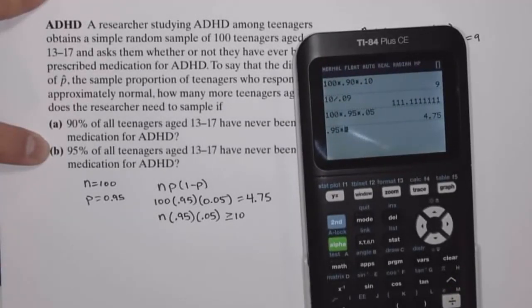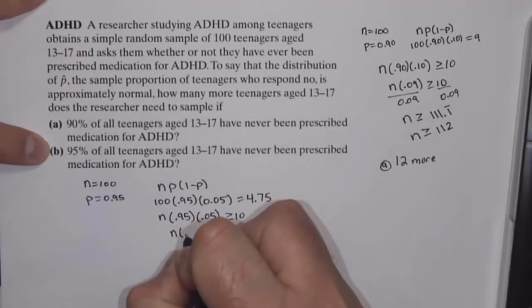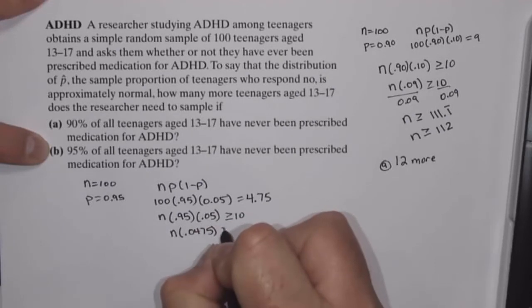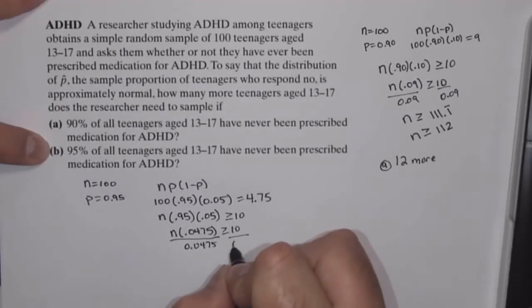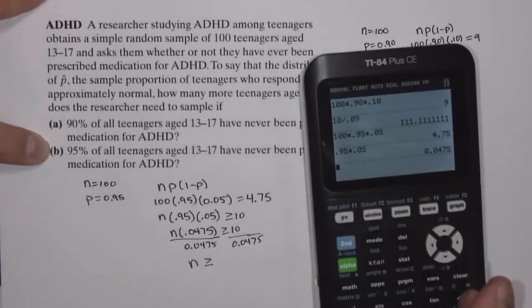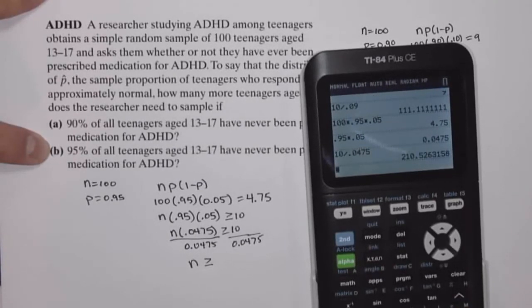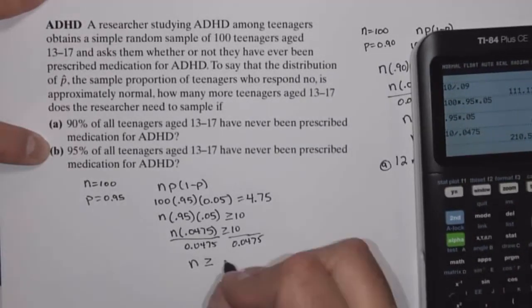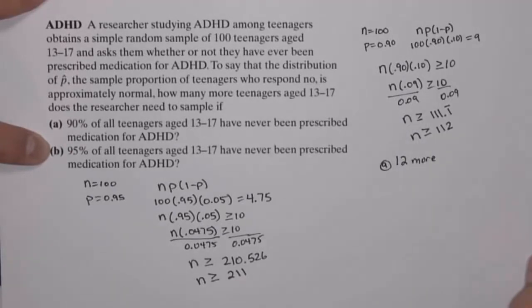Well, 0.95 times 0.05 is 0.0475, so I have n times 0.0475 that needs to be 10 or bigger. If we divide by 0.0475, then n is going to be greater than or equal to 10 divided by 0.0475, which is 210.526. So that would need to be 211 or more.